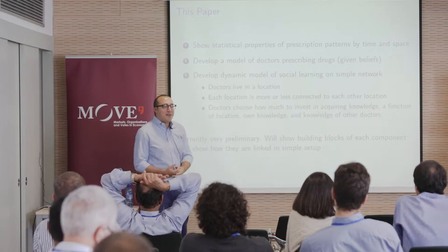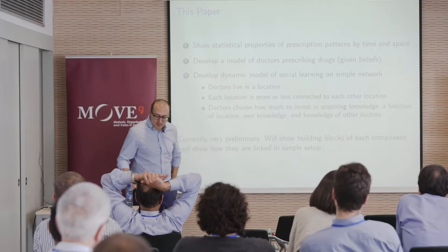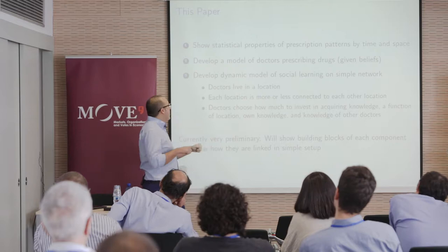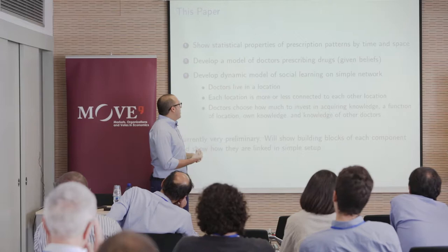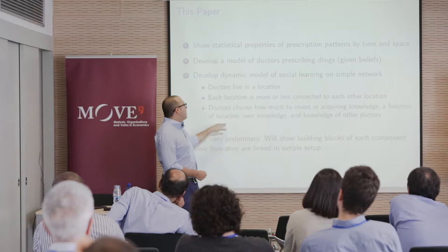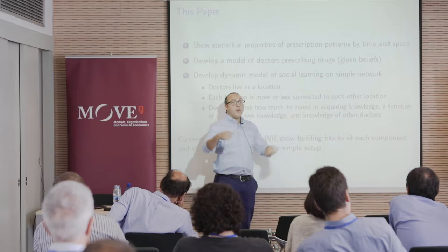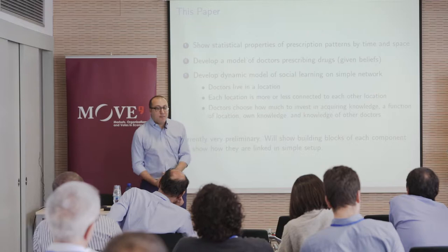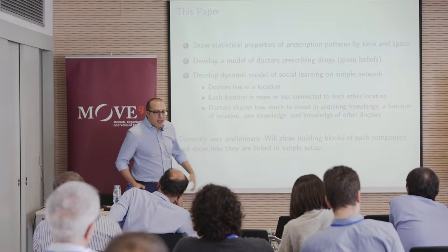The basic model will have doctors living in locations. Each location will be either more or less connected to other locations. Doctors will choose how much to invest in acquiring knowledge, and the knowledge they acquire will be a function of where they live, how much knowledge they currently have, and the knowledge of other doctors. This is super preliminary, and I'm going to show you building blocks of each of these three things.